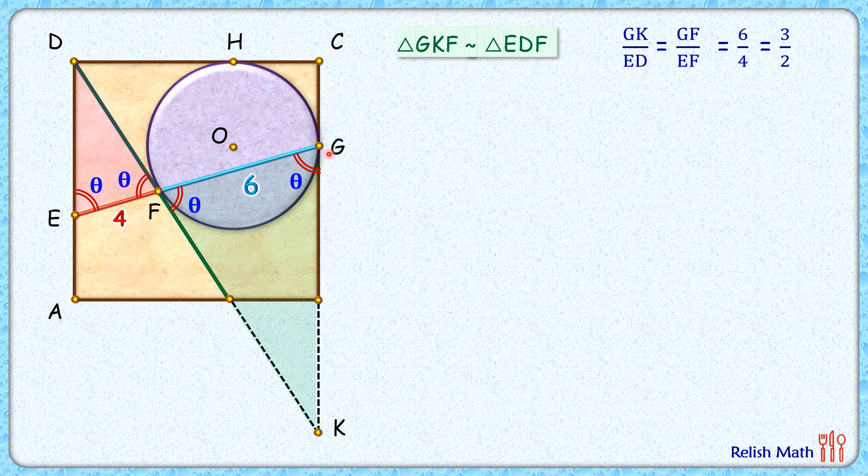Thus the ratio of GK and ED is also 3 is to 2. So if GK length is 3x, then ED length will be 2x. If you look carefully, this green triangle is an isosceles triangle, so FK will also be 3x. ED is 2x.